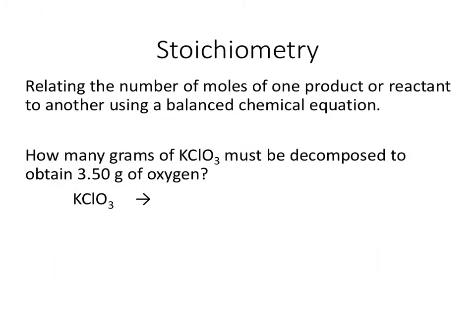When we do stoichiometry, we're relating the number of moles of one product or reactant to another using a balanced chemical equation — that balanced equation is a really important step. So let's try one: how many grams of KClO3 must be decomposed to obtain 3.5 grams of oxygen? That means KClO3 is going to make oxygen, and since I've already used up oxygen, my other product is going to be KCl.